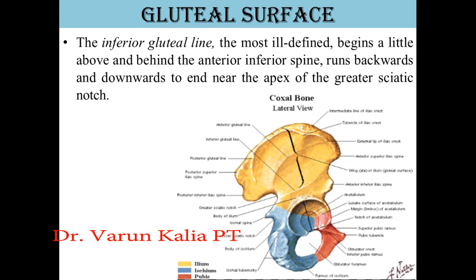The inferior gluteal line is the most ill-defined. It begins a little above and behind the anterior inferior iliac spine, runs backwards and downwards to end near the apex of the greater sciatic notch. यह बहुत ही ill-defined line है, AIIS के थोड़ा ऊपर से start होकर greater sciatic notch के apex के पास end होती है।